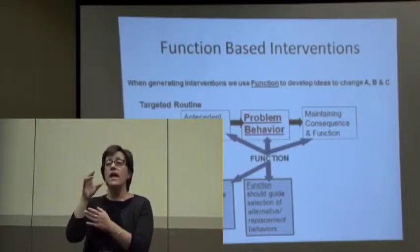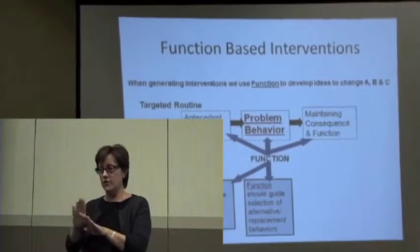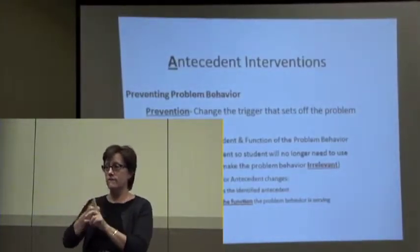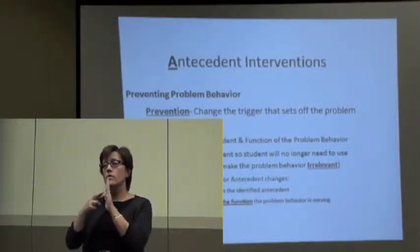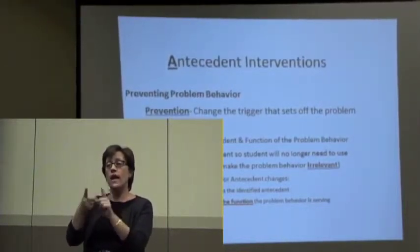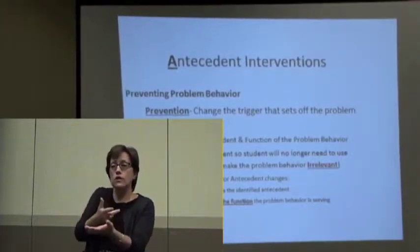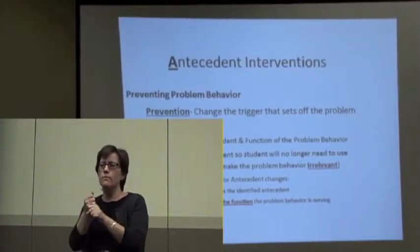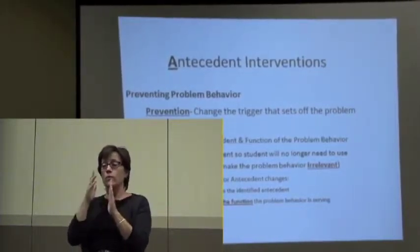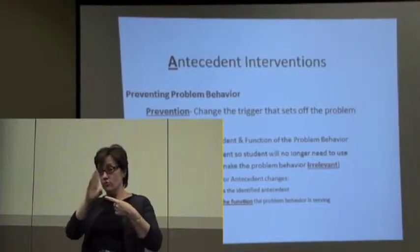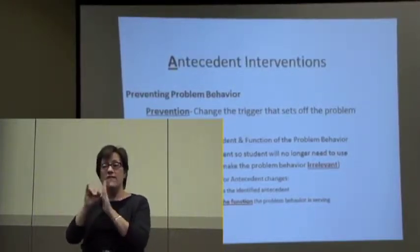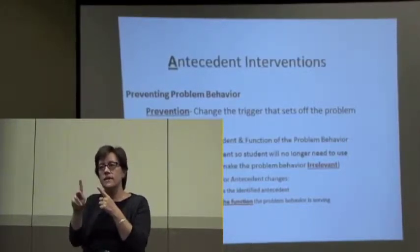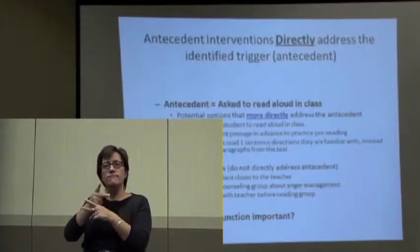The reason we did that functional behavior assessment is because the function will now guide how we prevent the problem behavior. The rules: we're going to change the antecedent — what's triggering the problem behavior — so the student will no longer need to use that behavior. We're making it irrelevant. Rule one: it directly addresses the identified antecedent, related to that task. And it addresses the function of behavior.